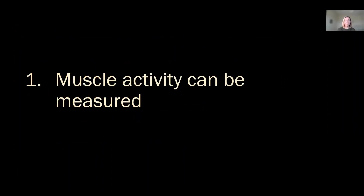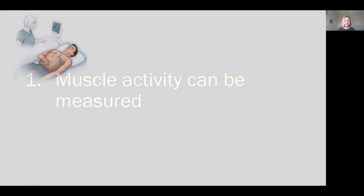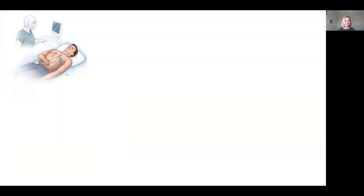The first thing that's important to understand is that muscle activity can be measured. You're probably already familiar with this from ECG. When a muscle contracts it generates an electrical signal. We can measure that if we stick sensors on the skin on top of that muscle — that's what ECG is: sensors on top measuring the muscle activity generated by the heart.